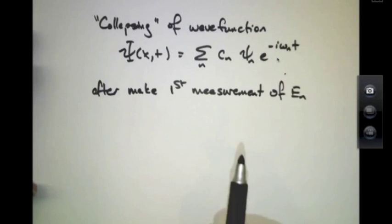So sometimes people have talked about collapsing of the wave function by giving the example of Schrödinger's cat.